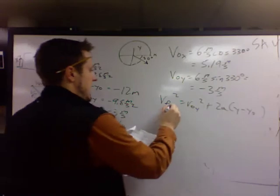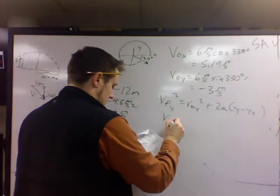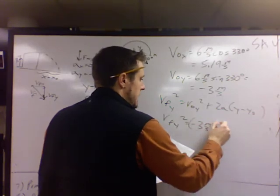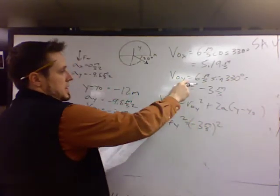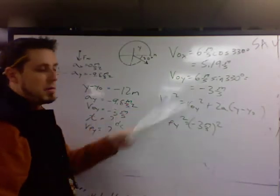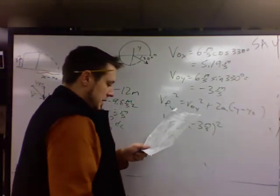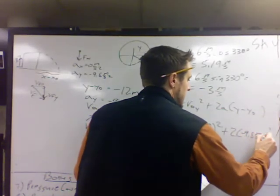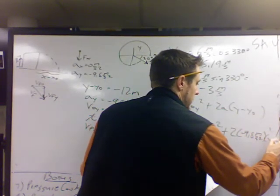We're looking for v final y squared. So v final y squared will equal negative 3 meters per second squared. Initial velocity in the y, it's just the component we found earlier at the beginning.